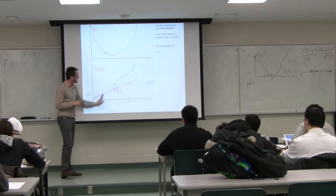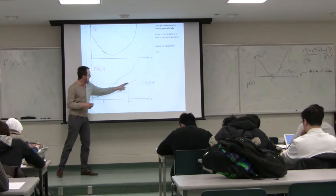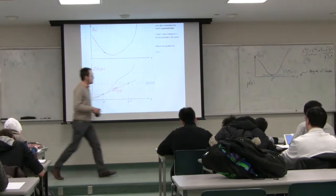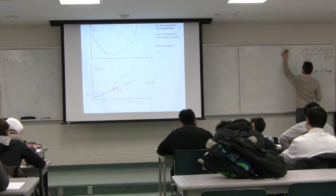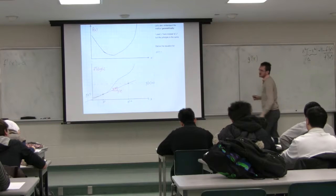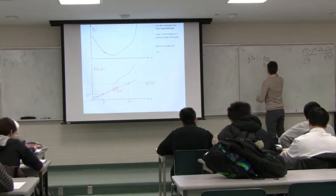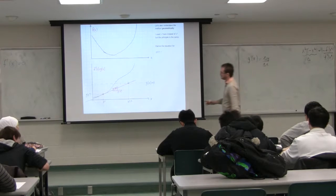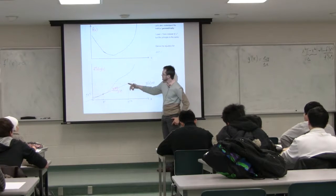At this nth — or kth — iteration, if we draw the tangent, the tangent equation is g prime of x. Here's the geometric insight: g prime of x is a slope, and a slope is a change in y over a change in x. I carefully choose the second point to be where it crosses zero, and the first point is where I currently am, x_k or x_n. So: change in y over change in x equals zero minus g of x_n, over x_{n+1} minus x_n.